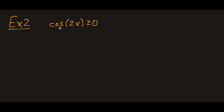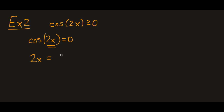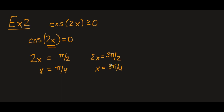Now we'll discuss another one: cosine of 2x is greater than or equal to zero. I'm going to treat this as a multiple angle question. You can also use trig identities if you'd like, but I'll say everything is already to one side. When is cosine of 2x equal to zero? That's when the angle 2x is equal to pi over 2 or 3 pi over 2, so x is pi over 4 or 3 pi over 4, plus 2 pi k.